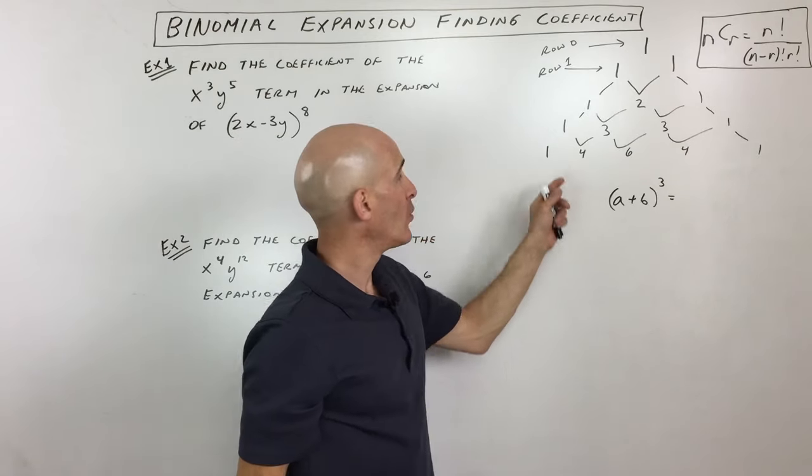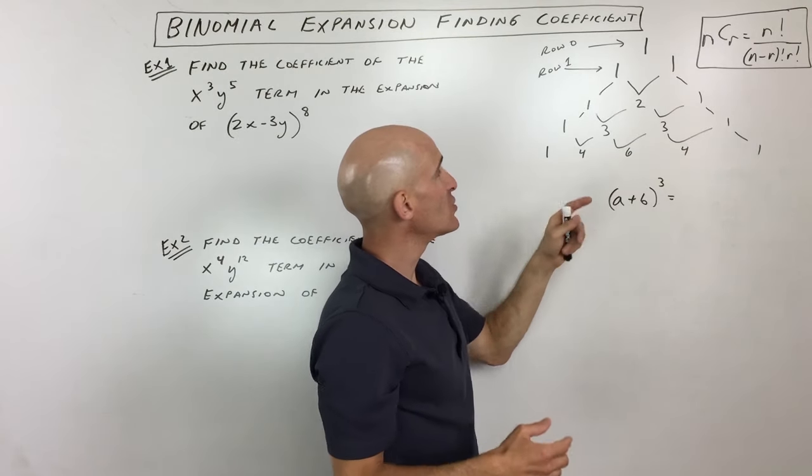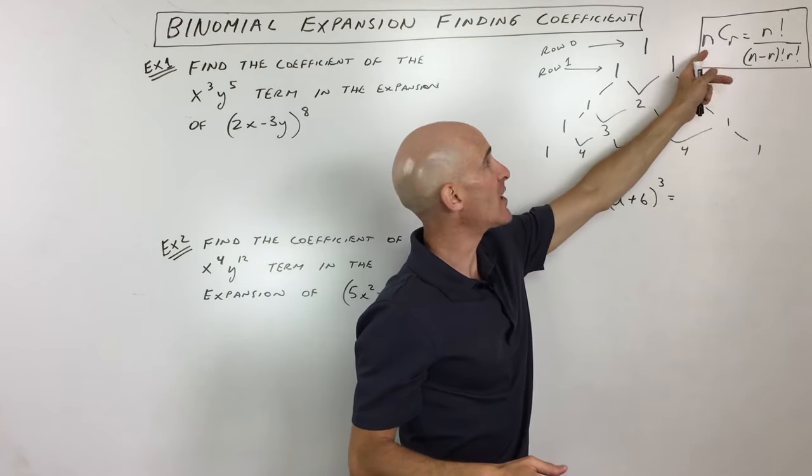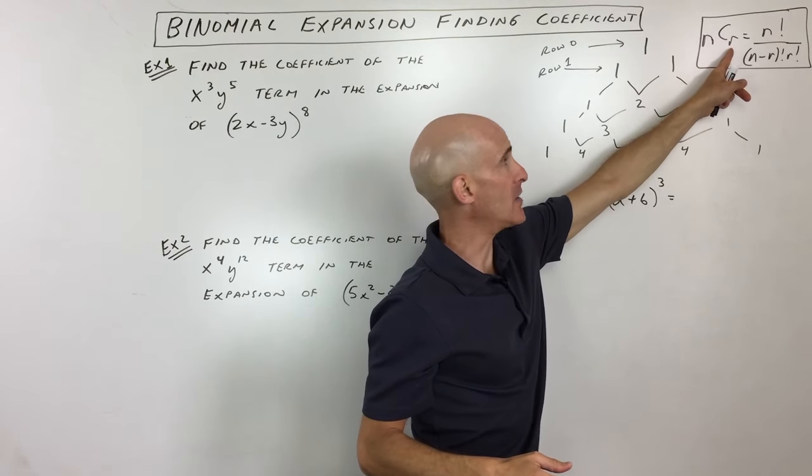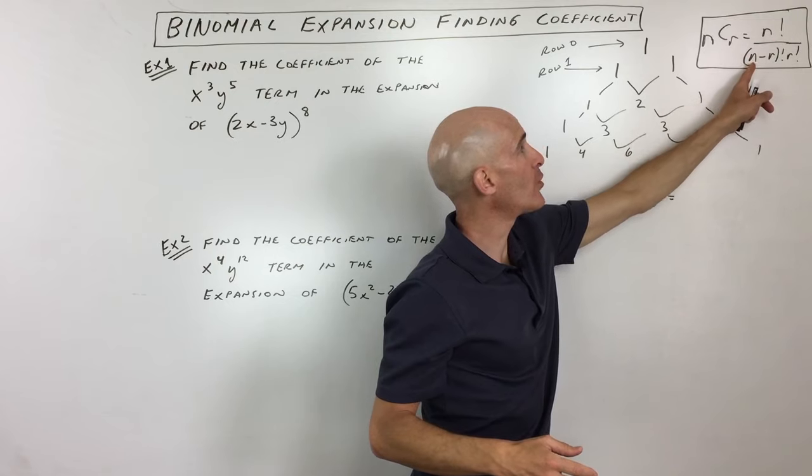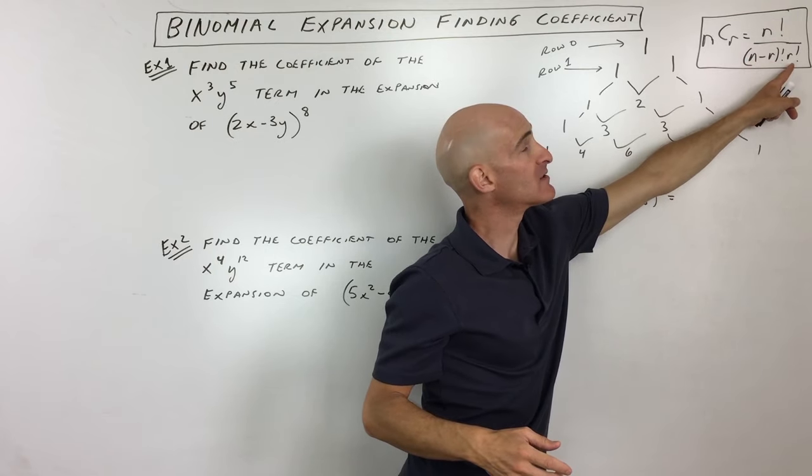Now another way to get these terms is to use this combination formula. So out of n items, how many ways are there to choose r items? And the formula is n factorial over (n minus r) factorial times r factorial.